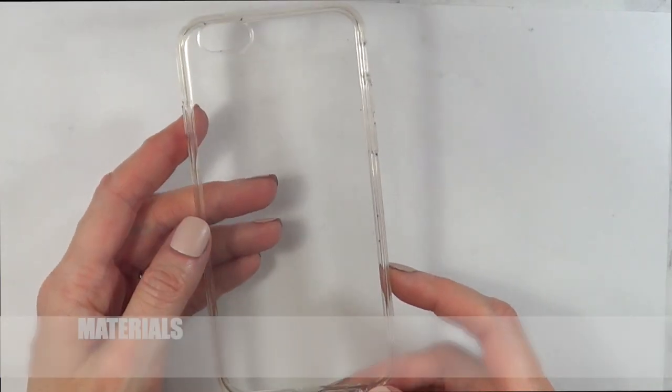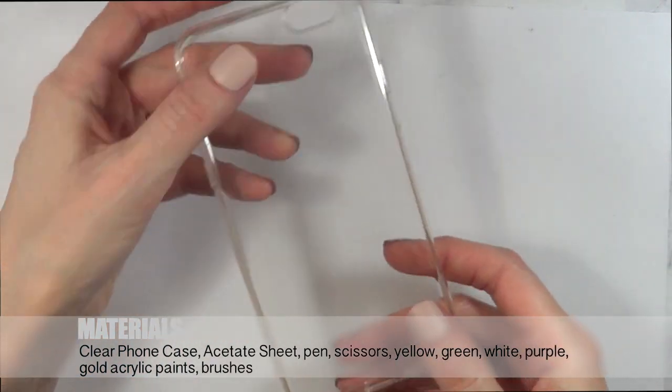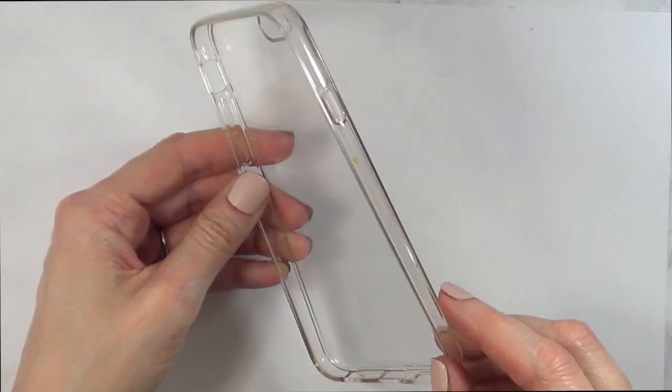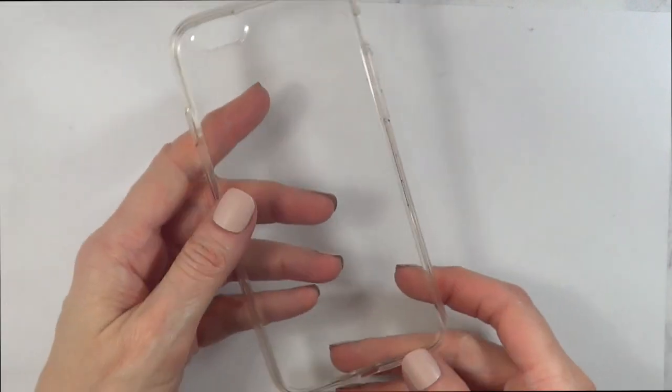I'm going to be starting with a clear phone case that is really flexible. I love it and I bought it from eBay. If I can find the seller that I got it from, I'm going to link it below, but if not, you can find a bunch of different ones from eBay.